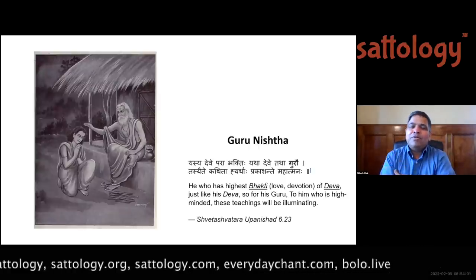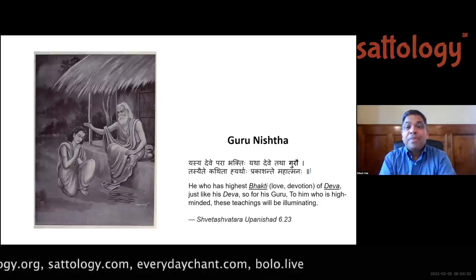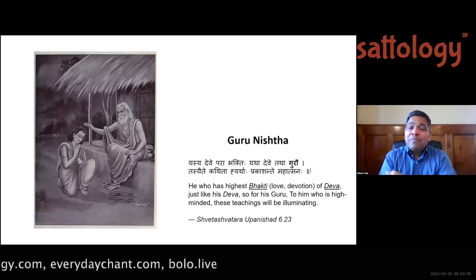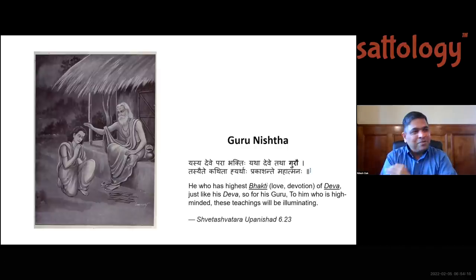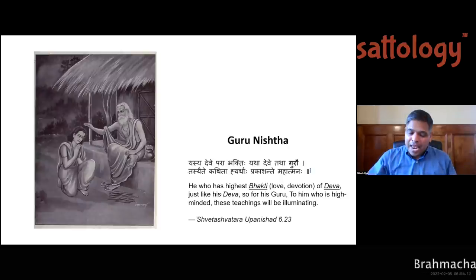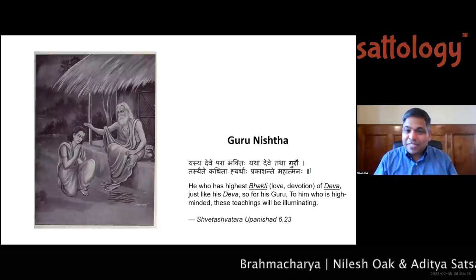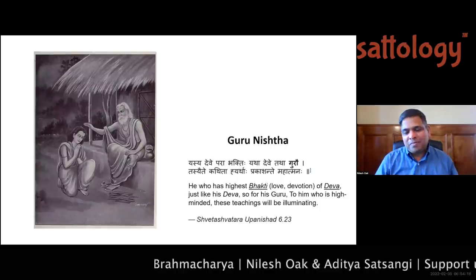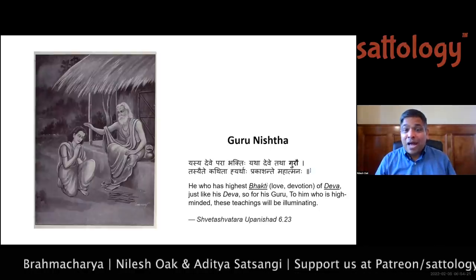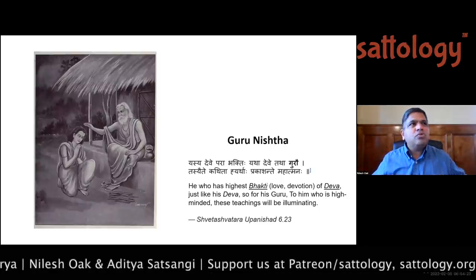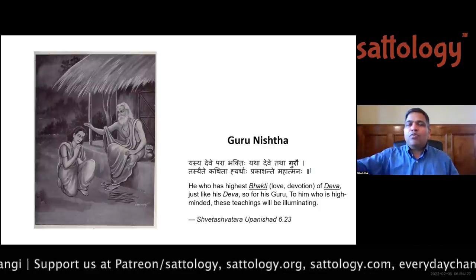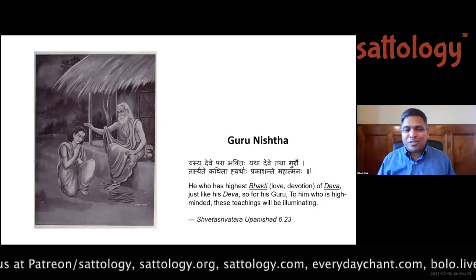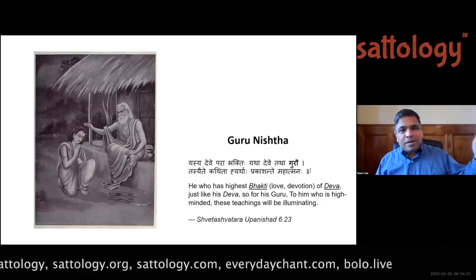Now you get into vanaprastha ashrama. I picked this picture of Dhritarashtra, Gandhari, and Kunti because they took it literally — they were royalty. The idea behind going to the vana, away from the capital, is that because of their experience, they may be tempted to give advice to the next generation — and that is to be avoided. Therefore they go to the forest.